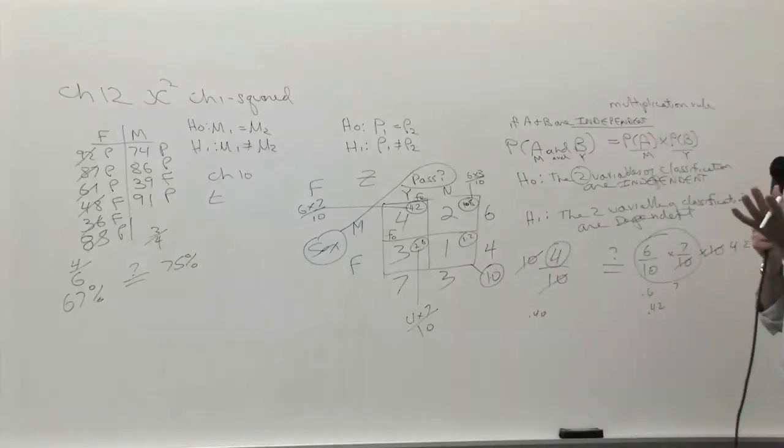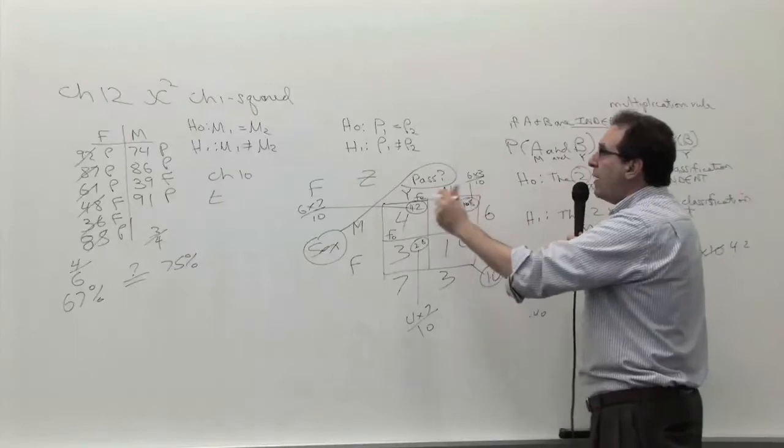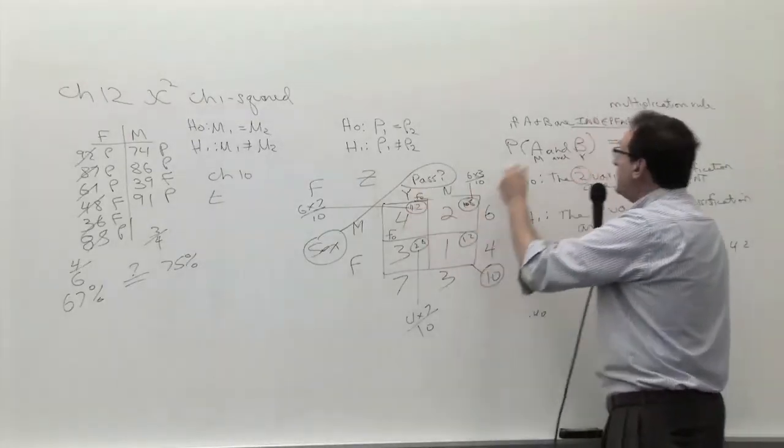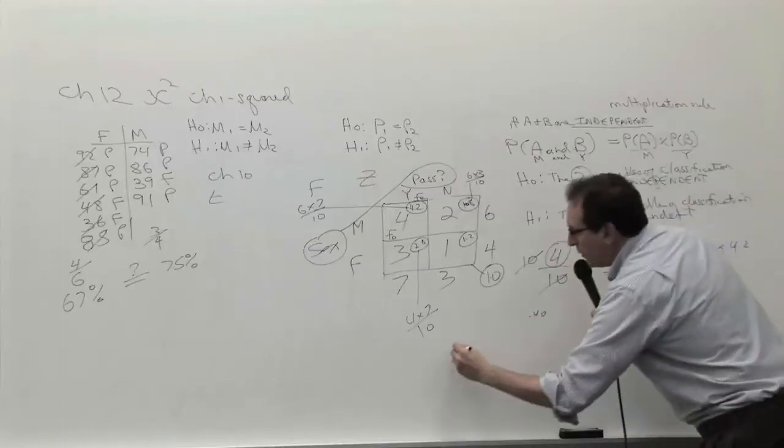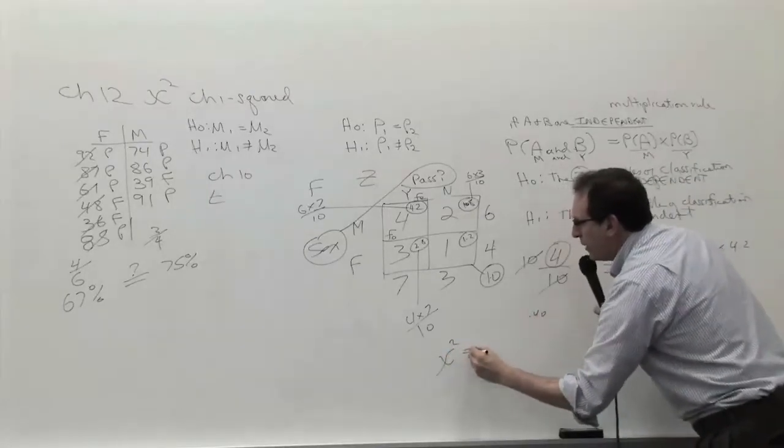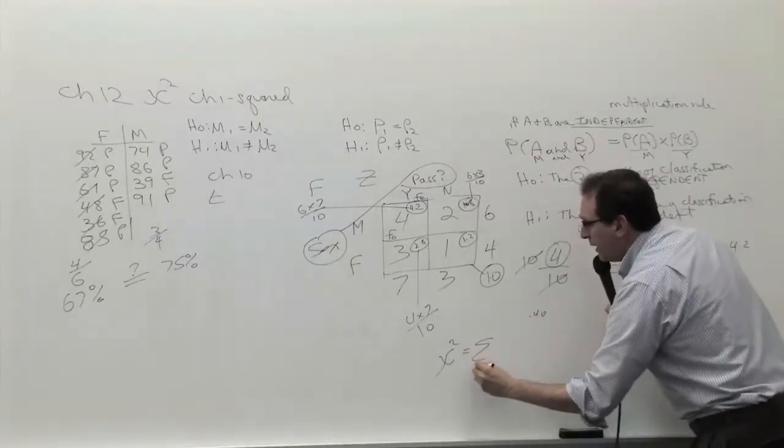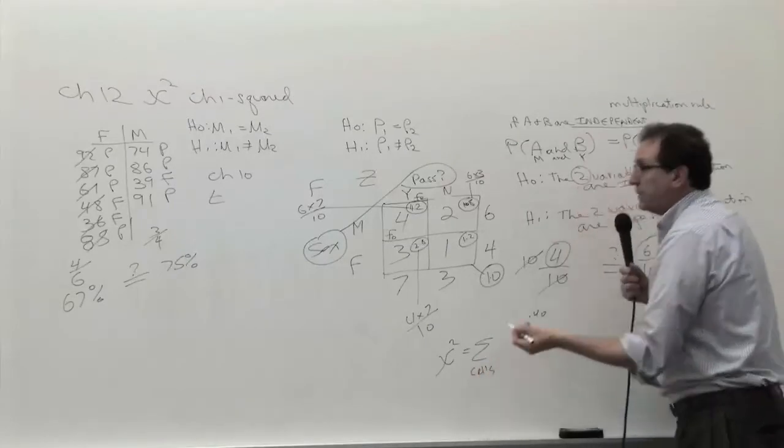Now the question is how do you process those numbers to come up with a single measure of how close the data is to the assumption of being truly independent. And that's called the chi-squared.